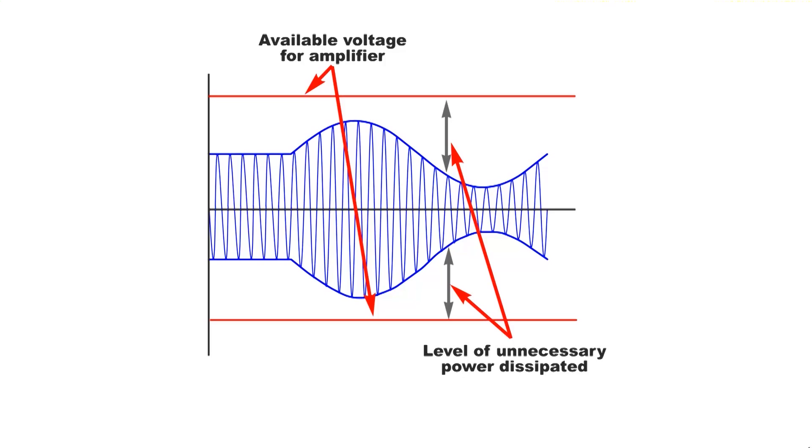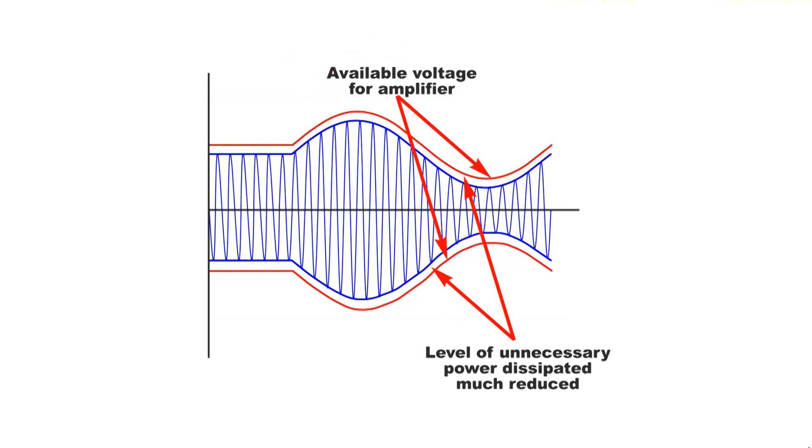The rest of the time, this power is dissipated as heat, which means the amplifier runs at a low efficiency level. Would it not be better if the amplifier was given the right voltage to handle the amplitude of the waveform at any given point?